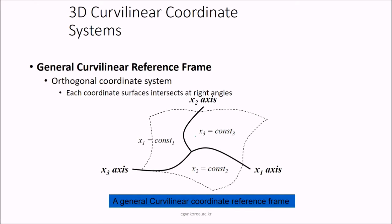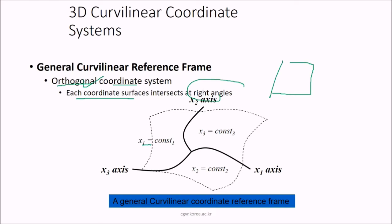In a 3D curvilinear coordinate system — a general curvilinear coordinate system — we do not normally get exact square-type figures in 3D representation. For that, we use a curvilinear reference frame and try to make an orthogonal coordinate system where each coordinate surface intersects at right angles. With axes x1, x2, x3 and corresponding cosines c1, c2, c3, these are curvilinear axes forming a general curvilinear coordinate reference frame.